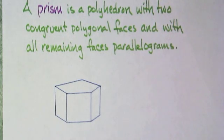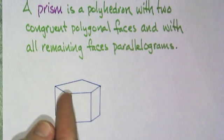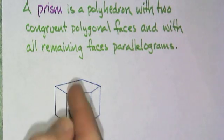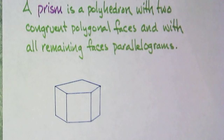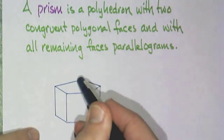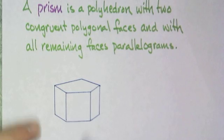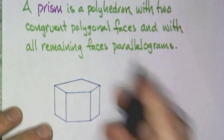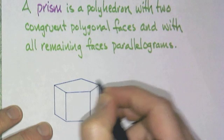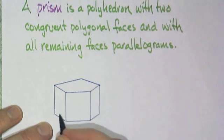Now, let's talk about a special polyhedra. A prism is a polyhedron with two congruent polygonal faces and with all remaining faces parallelograms. This one is a pentagonal prism. We classify it by the two faces which match. And these two faces are pentagons.